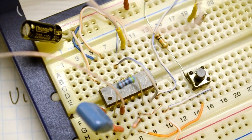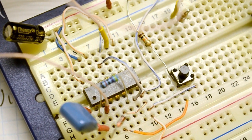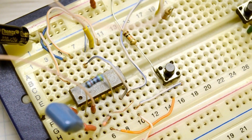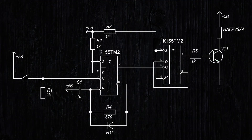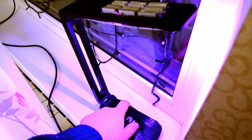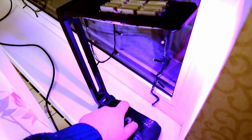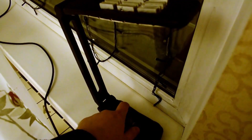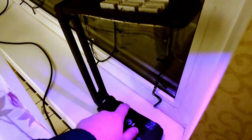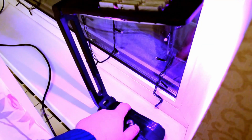For example, I integrated such a circuit into a lamp for plant lighting, powering the LEDs through a KT819 transistor. During operation, nothing heats up and you can do without heat sinks. A regular button works fine.